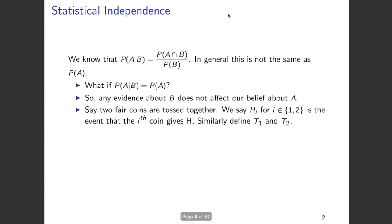Let us try to understand this with an example. Let us consider two fair coins that are tossed together. H1 denotes the event that there is a head in the first coin toss, and H2 denotes the event that there is a head in the second coin toss. Similarly, T1 denotes the event that there is a tail in the first coin toss, and T2 denotes the event that there is a tail in the second coin toss.